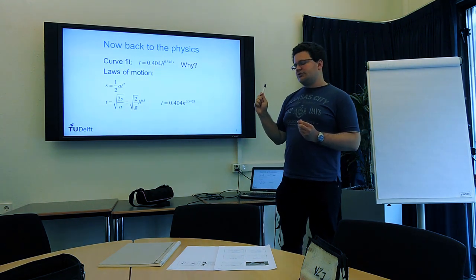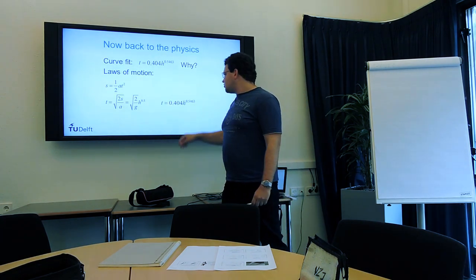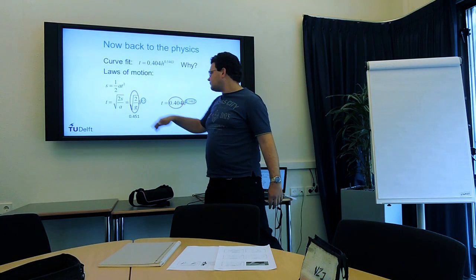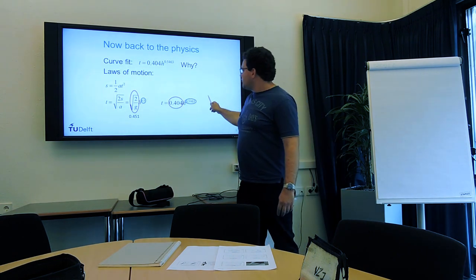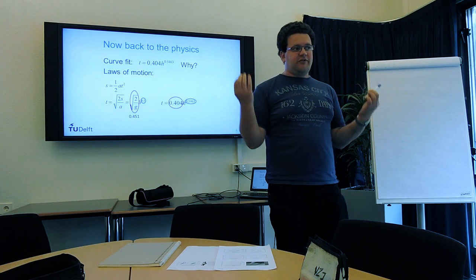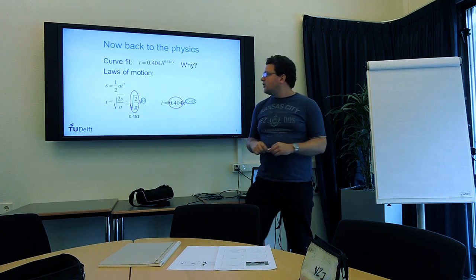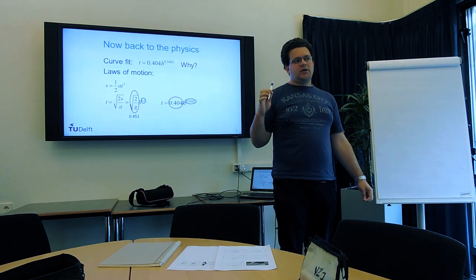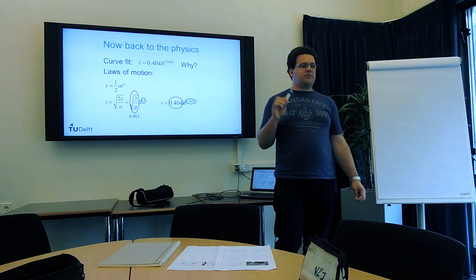And then we can start comparing things. We say, hey, here we have a half, here we have something close to a half. Looks good. And what about the 0.404? Well, if we work out the square root 2 over g term, then we get something quite close to 0.404. So now we can understand this equation. This term here gives us information about gravity, gravitational acceleration. And this half, that comes from the fact that, in the end, we have to integrate the acceleration twice to get position. So to really understand what's going on, we can't just do experiments and correlations. We have to think about the physics.